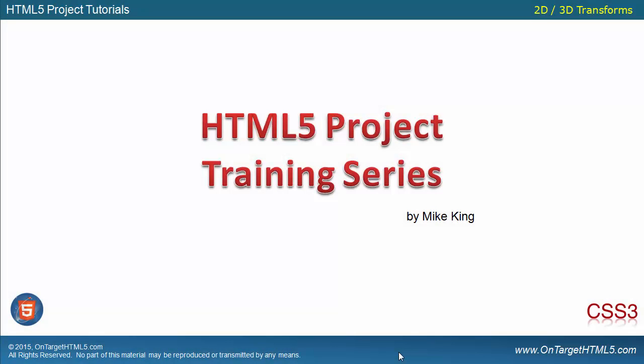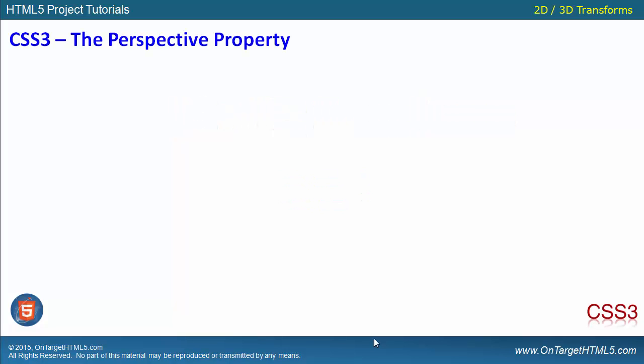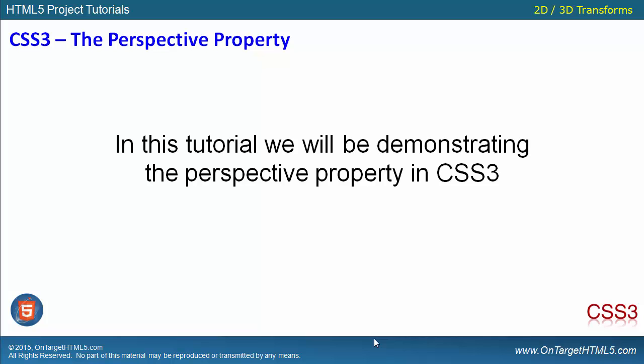Welcome to the HCMO 5 project training series. I'm Mike King, your host, and in this tutorial — part four of our 2D/3D transforms tutorial — we're talking about the changes to CSS3 with transformations. Specifically, this tutorial is about the perspective property, and we'll be going through a bunch of different demonstrations as to how we use it and why it's so important for our 3D transformations.